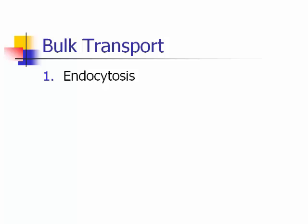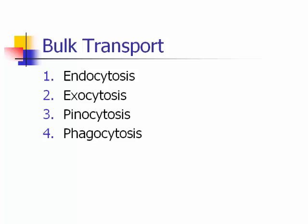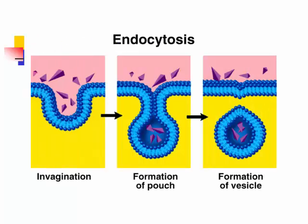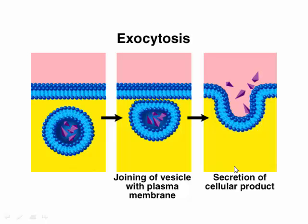Bulk transport moves large amounts of material quickly in and out of a cell. Endocytosis brings things in — endo means inside. Pinocytosis (pino = to drink) brings in fluid; phagocytosis (phago = eat) brings in larger things like bacteria or viruses. The membrane forms a little pouch like a drawstring purse, creating a vesicle. Exocytosis is the opposite — a vesicle fuses with the plasma membrane and releases its products outside.